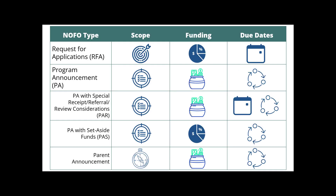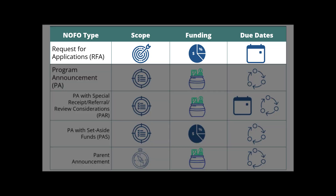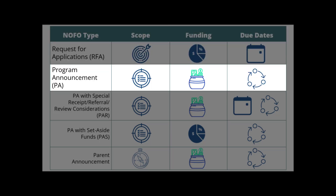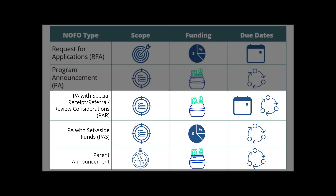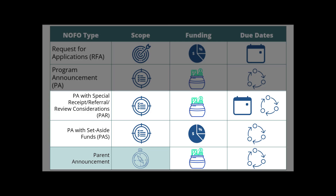We've covered a lot of information. Let's take a moment to review. Requests for Applications have the most narrowly defined scope, use set aside funds, and a single or few submission due date options. Generally, program announcements inform the community of new or ongoing programs that highlight areas of scientific interest. They compete for general IC funds and use our standard due date schedule. Exceptions to those general characteristics are identified by our three special types of PAs. PARs are PAs with special receipt, referral, or review considerations. PASs are PAs with set aside funds. And lastly, parent announcements have the broadest scope and do not specify an area of scientific interest or announce a particular program.